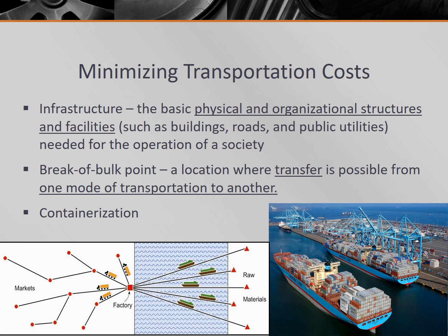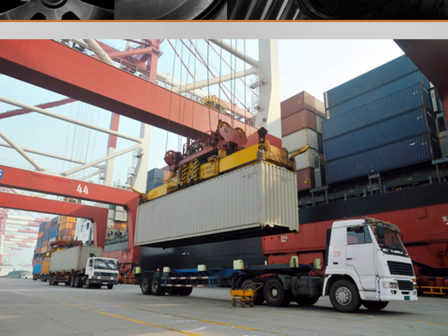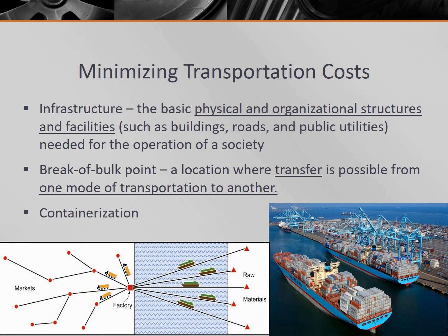Let's talk for a moment about the current system of containerization. Before standard sized shipping containers, a ship would arrive at port with various odd-sized crates and boxes, and hundreds of dock workers would be needed to unload the goods by hand. The container system created standard sized metal containers which can hold any variety of finished product or raw good. These containers are loaded, stacked, and unloaded by special mechanized cranes at break of bulk points and can be placed on trucks, boats, and railway cars. In fact, 90% of the world's non-bulk cargo is transported via containers. This development lowered costs and increased flexibility for manufacturers, who can now focus on reducing other costs like labor.